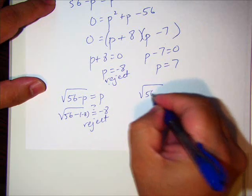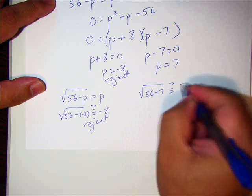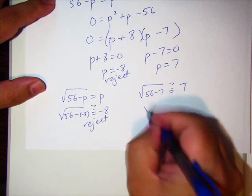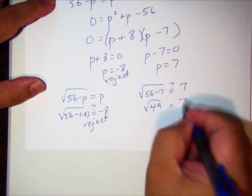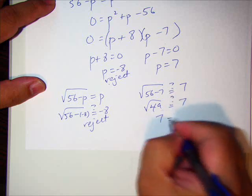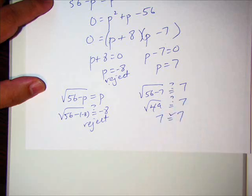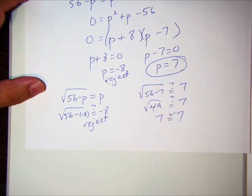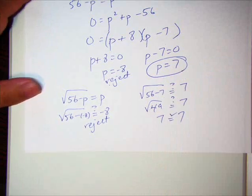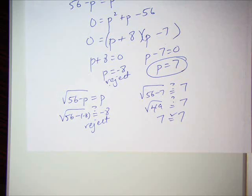Plug in 7. √(56 - 7). Is that equal to 7? What's that? 49. Why not? Yep. It's true. 7 = 7. So my final answer, number 11, is P = 7.